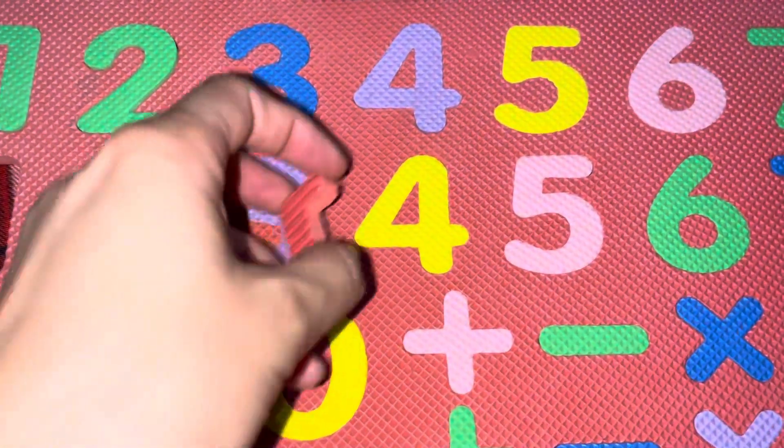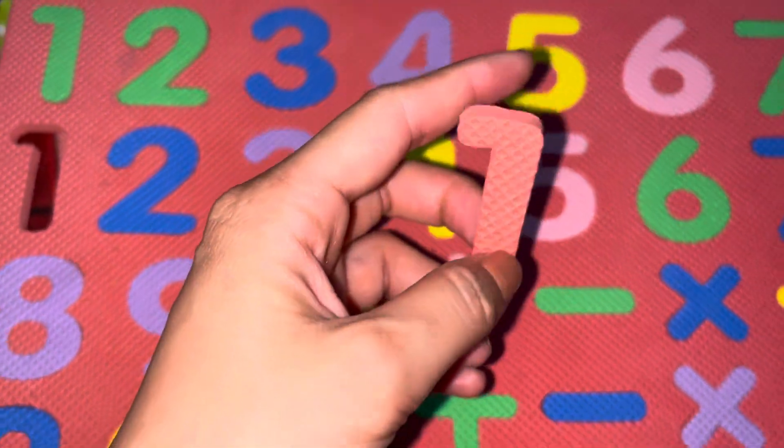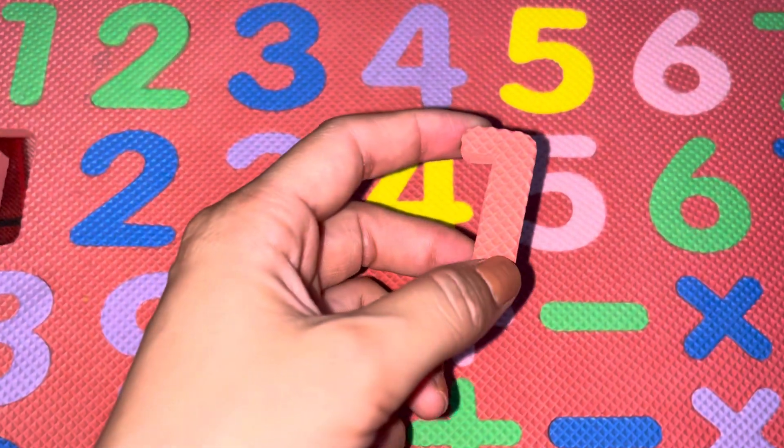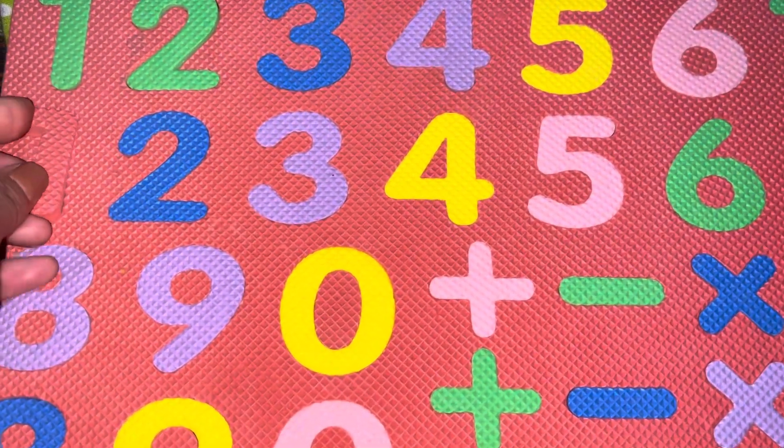Next number is. Identify the number. It's 1. What's the spelling of 1? O-N-E, 1.